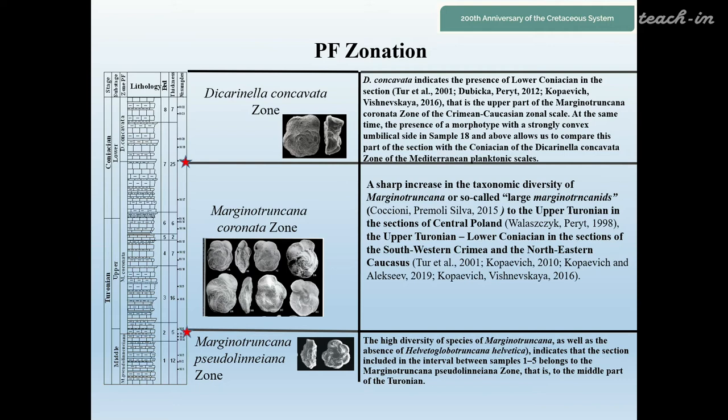At the same time, the presence of Marginotruncana morphotypes with a strongly convex umbilical side in sample 8 and above allows us to compare this part of the section with the Concavata zone of the Mediterranean planktonic scale.